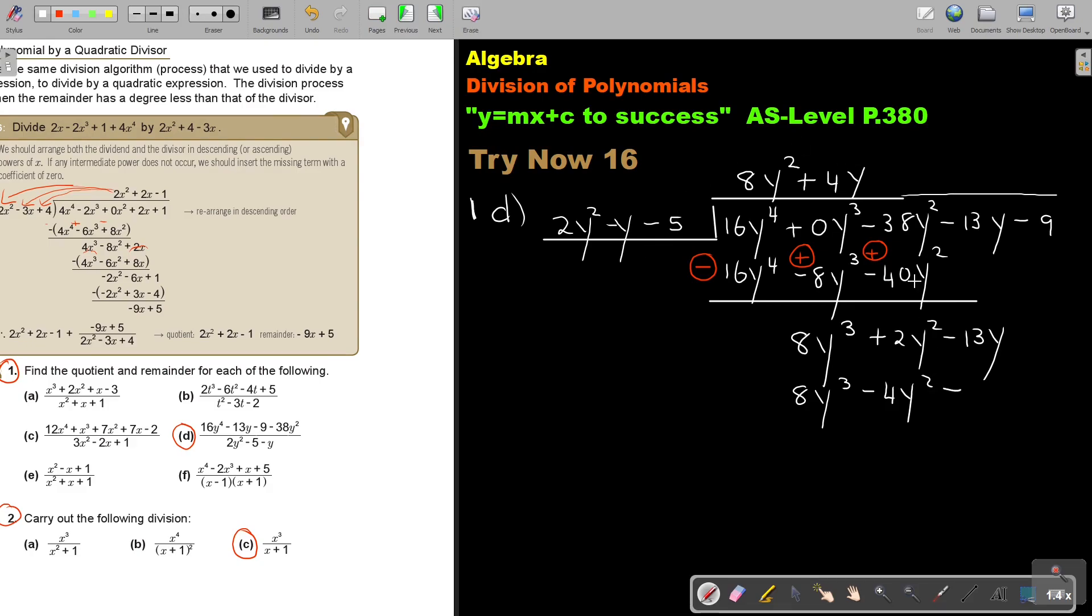And then this one cancel out. And this one, it's going to be 6y squared. And this one is going to be plus 7y. And minus that 9.